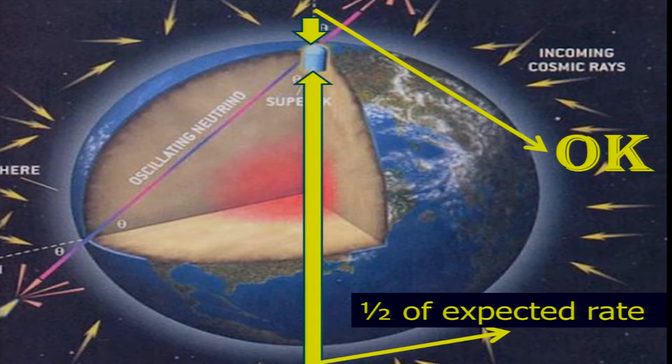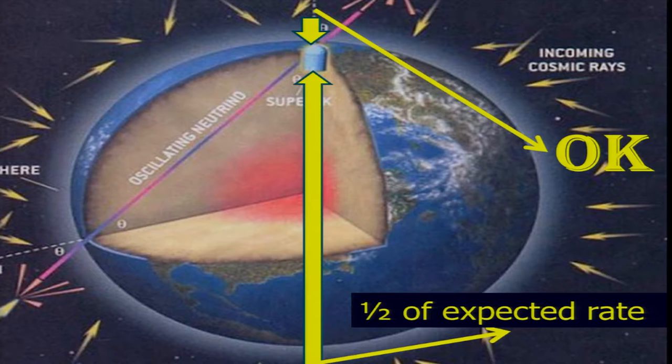Now, here is the Kamioka detector. And one studied the muon neutrinos coming from the upper atmosphere, just above Kamioka. And here everything was OK. But when one studied neutrinos coming from the other side of the Earth, it was a factor of two missing. And that led, finally, to the discovery of the real neutrino oscillations, where a muon neutrino becomes mostly a tau neutrino, and then coming back to be a muon neutrino.